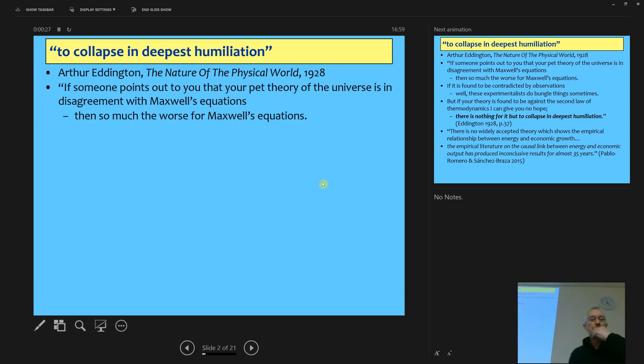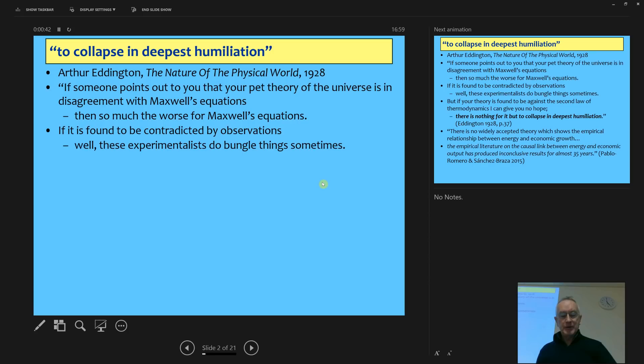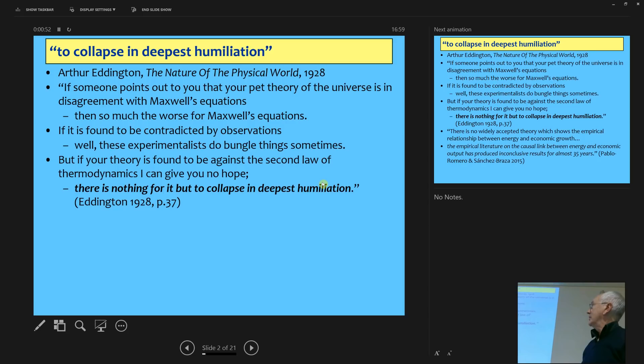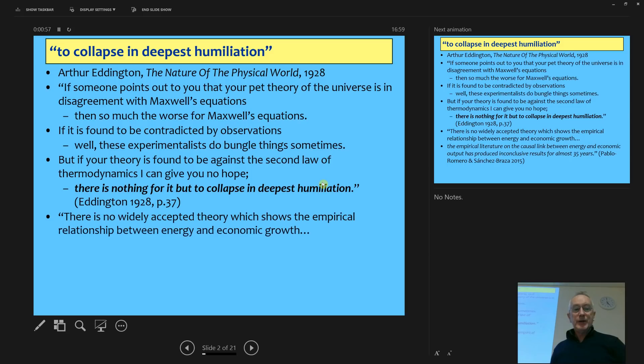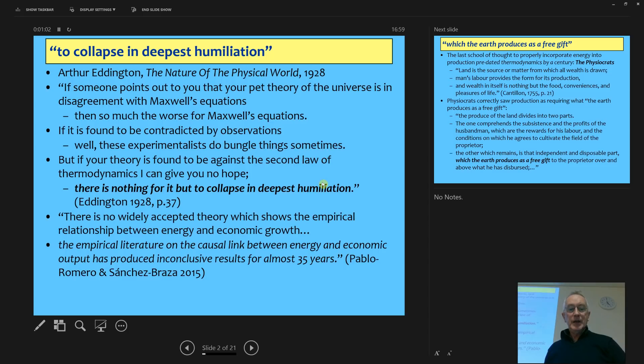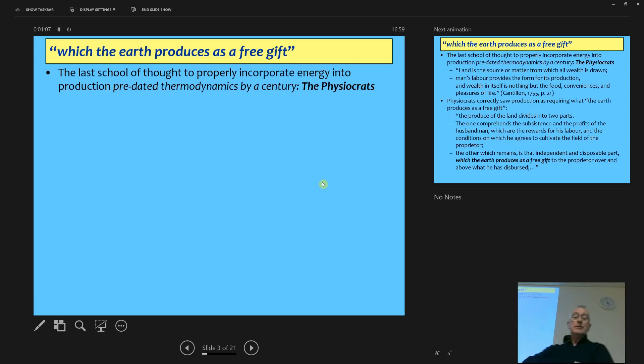What I'm trying to do is bring energy into production in a fundamental way, and it's been bugging me for some time that this statement is an extremely true paraphrase of the way that economists in general have treated energy. In other words, they haven't. This is a wonderful statement from the physicist Eddington, a popularizer of physics back in the 1920s, who said basically if you have a theory which contradicts Maxwell, well, Maxwell could have made a mistake. If the experimenters get it wrong, too, as well. But if you don't follow the second law of thermodynamics with your theory, your theory is nonsense.